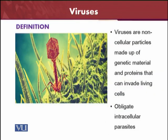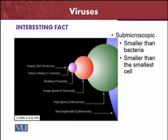Viruses are non-cellular particles made up of genetic materials, which is DNA or RNA, and proteins. These are very simple particles and they can just evade from living cells. These are obligatory intracellular parasites. These are sub-microscopic and smaller than bacteria — actually these are the smallest particles discovered so far from a disease point of view. They cause disease in all animals, plants, and human beings, and they are of different sizes.